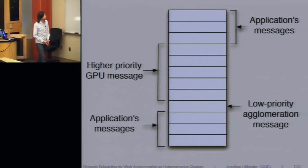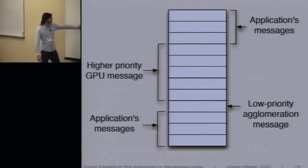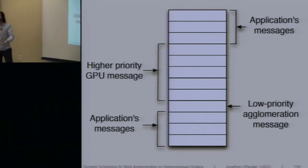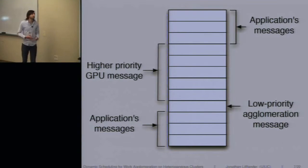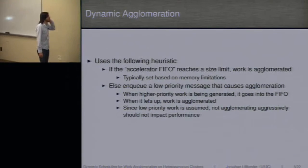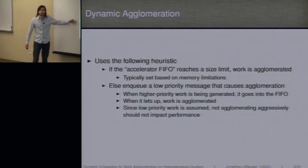The way the scheduler manages this is there's some application messages of various priority. But then there's higher priority. We have high priority GPU message compared to a low priority agglomeration message. This is a way of using the Charm++ runtime priorities to manage the grouping. When high priority GPU messages are constantly being put into the FIFO, at some point, either when we reach memory limits or when this lower priority agglomeration message shows up and is executed, because all higher priority ones are gone, the agglomeration takes place. So when the FIFO reaches a size limit, based on memory limitations they're agglomerated. And we also enqueue this low priority message that causes agglomeration at some point.